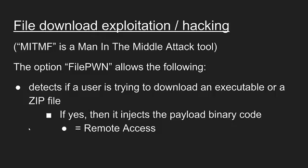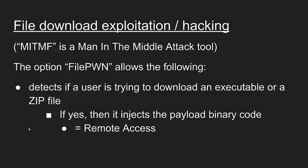The next option is File Download Exploitation: if a user on the network tries to download an executable or a zip file, the script automatically detects this and injects a payload binary code, which then grants you remote access as soon as the user opens the zip file or executes the executable. This is very dangerous because if your little machine is in the network with all the time it needs, it can always listen, and at some point a user will download an executable or zip file.